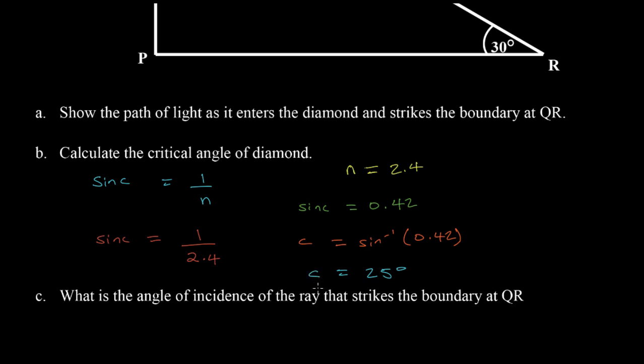Let's remind ourselves of the significance of the critical angle. By definition, the critical angle is the angle of incidence which, if exceeded when going from a more dense medium to a less dense medium, produces a condition known as total internal reflection. So once the angle of incidence — when the ray is going from diamond to air — exceeds the critical angle of 25 degrees, we get total internal reflection.